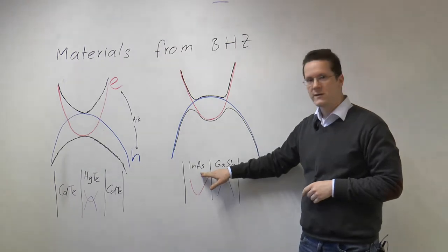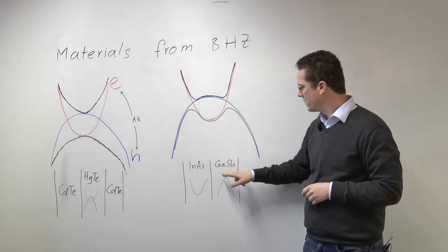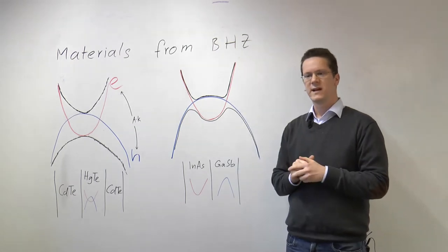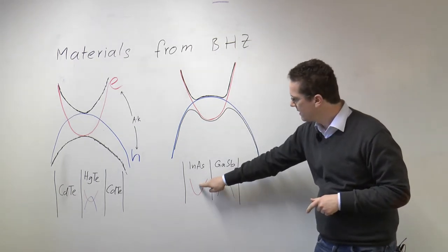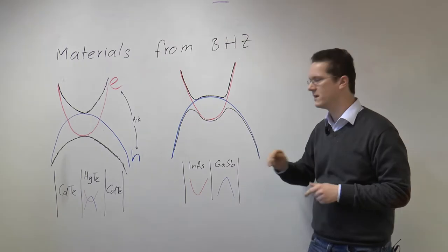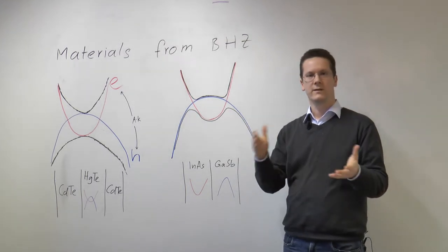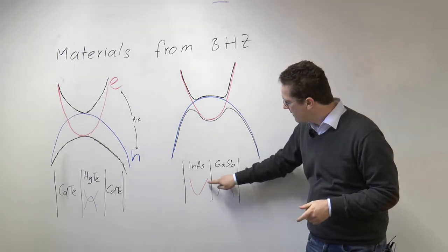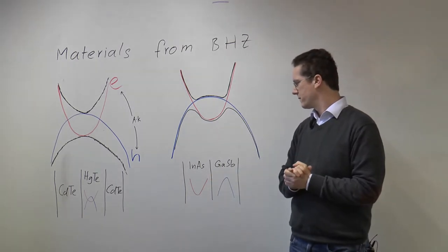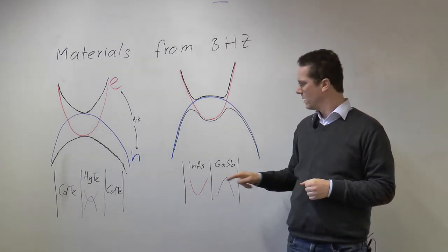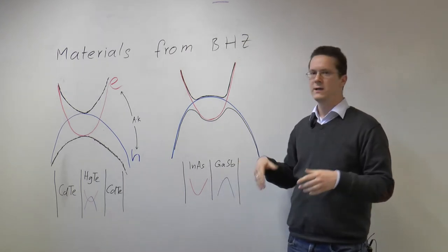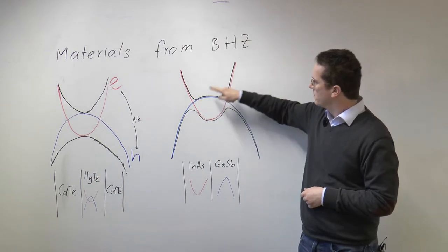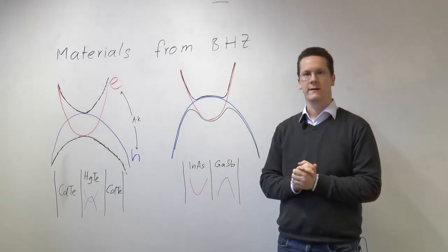We can take a layer of indium arsenide and a layer of gallium antimonide, and the band offsets of these materials are just such that the electrons in indium arsenide are below the holes in the gallium antimonide. So that also gives us an inverted band structure. Now in this case the tunneling between these two layers is giving us this k-linear coupling. Because it goes between layers it's usually less strong than in mercury telluride and the band structure will usually look like the one shown here.